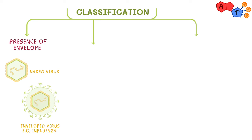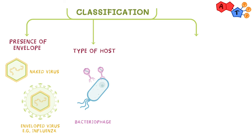The fourth way we can classify viruses is by the type of host. Viruses can infect almost every type of living organism and are named accordingly. The most important example includes bacteriophages, which are viruses that target bacteria. The last way we can classify viruses is by their method of action. All of these properties — the presence of an envelope, type of capsid arrangement, type of host, etc. — can influence how a virus enters its host cell.